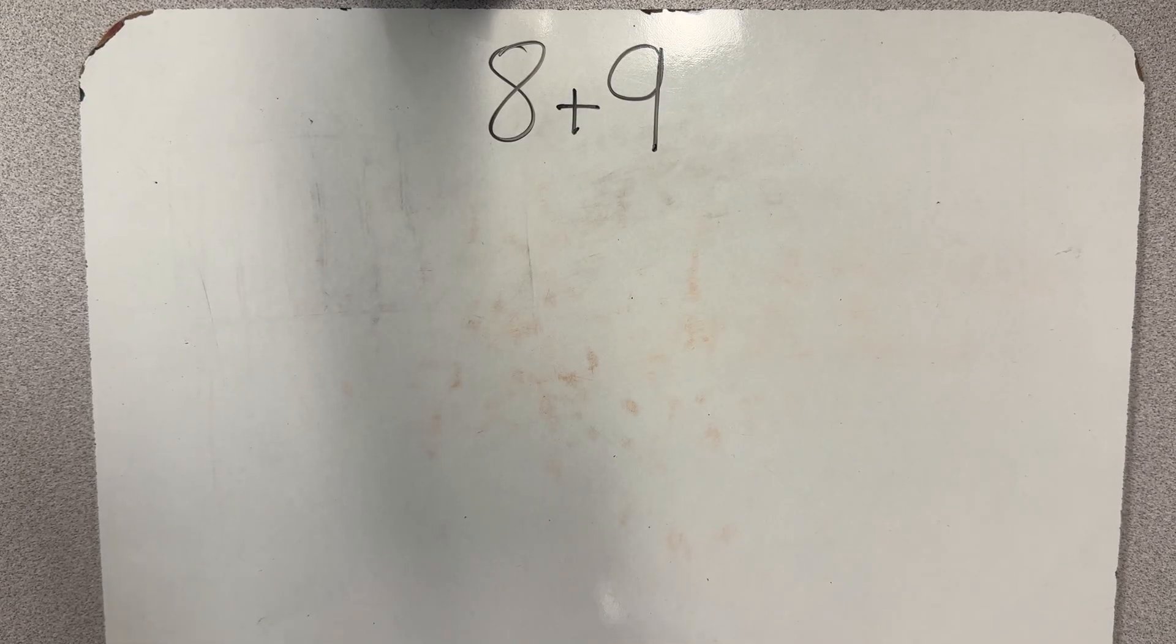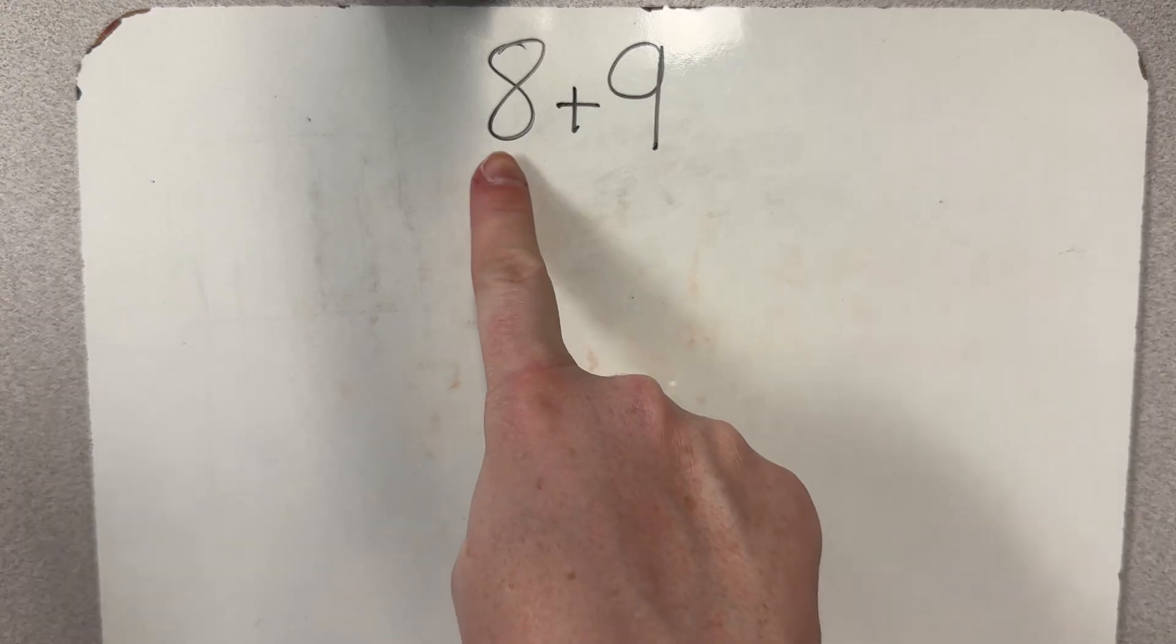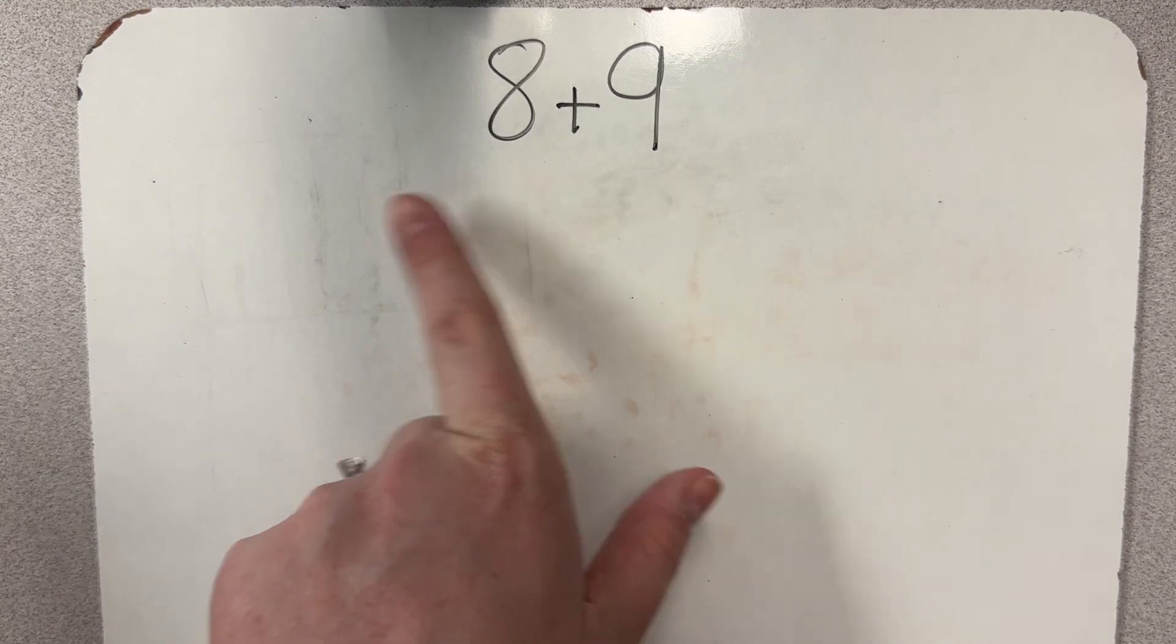We are going to work on sketching within 20 to add and subtract. We are going to first start by building and transitioning that to a sketch. So here I have 8 and then I have 9, so 8 plus 9.